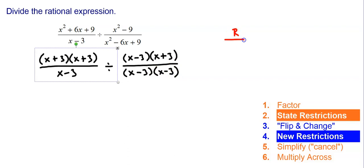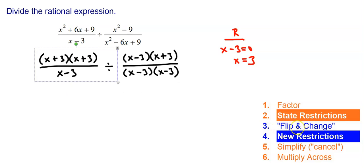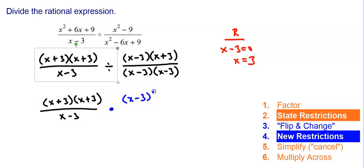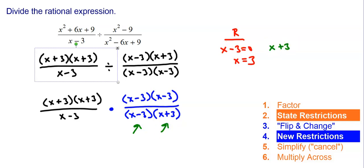Once you factor, state the restrictions. From the denominator I have x minus 3 equals zero, so x equals 3. Now I flip the second fraction and change it to multiplying — the first expression stays the same, I change division to multiplying, and flip the second expression. Once I flip it, I find any new restrictions from the new denominator: x minus 3 is already covered, but now I have x plus 3 equals zero, so x equals negative 3. My restrictions for this problem are negative 3 and 3.